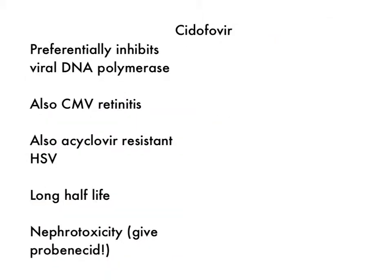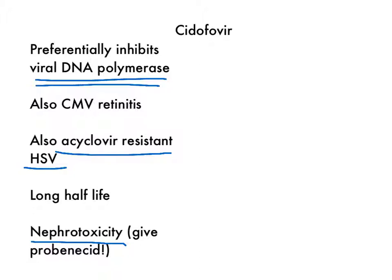The last drug is cidofovir, which also preferentially inhibits the viral DNA polymerase. It's used in CMV retinitis along with foscarnet, and also for acyclovir-resistant herpes simplex virus. Like foscarnet, cidofovir does not require phosphorylation by the viral kinase, which is why both foscarnet and cidofovir can be used when kinase-dependent drugs fail. Cidofovir causes nephrotoxicity, and probenecid is given along with it to prevent or attenuate nephrotoxic effects. Cidofovir also has a long half-life — a useful memory cue is that probenecid is typically used to prolong half-life.